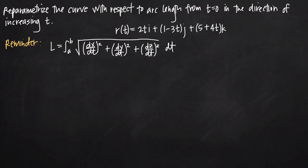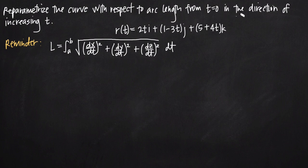Today we're going to be talking about how to reparametrize a curve with respect to arc length. In this particular problem, we've been given the vector function r of t equal to 2t·i plus (1 minus 3t)·j plus (5 plus 4t)·k. We've been asked to reparametrize this curve with respect to arc length from the point where t equals 0 in the direction of increasing t. Reparametrizing the curve basically means we are redefining the curve in terms of a different parameter.